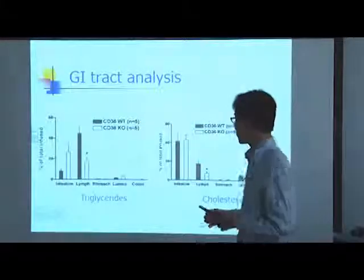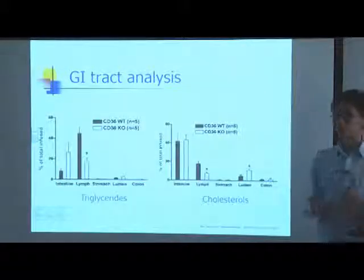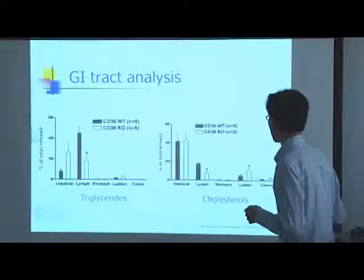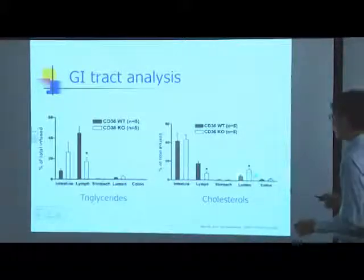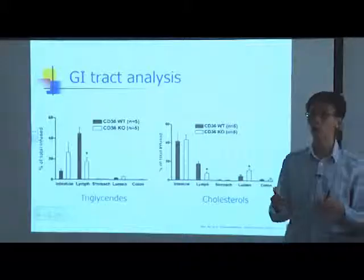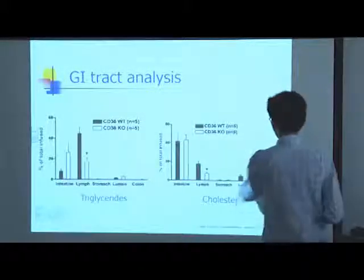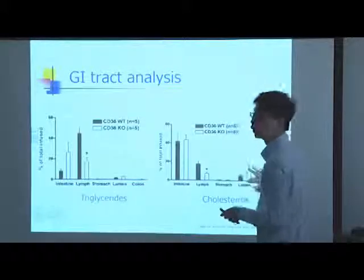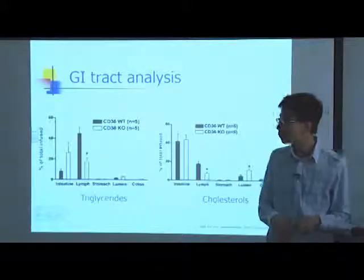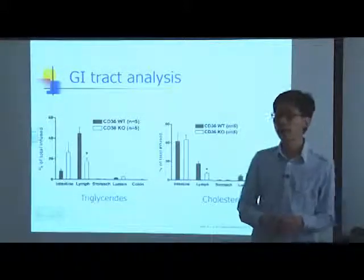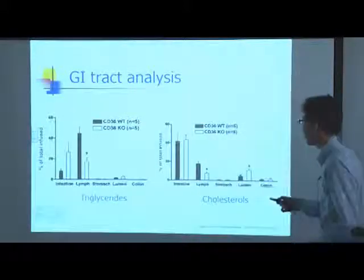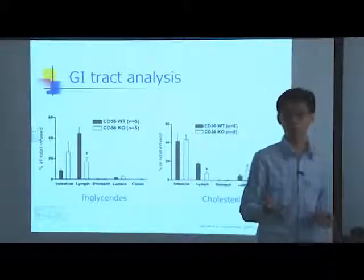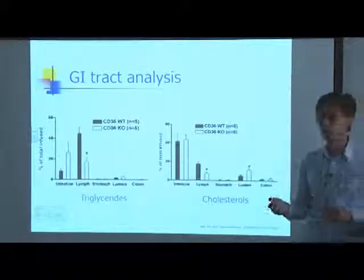Looking at the cholesterol data first: in the lumen of the intestine, knockout animals had much more cholesterol accumulation relative to wild type, indicating that CD36 facilitates cholesterol uptake because cholesterol got stuck in the lumen of knockout animals. In the lymph, radiolabeled cholesterol was also secreted less by knockout animals. This fit our hypothesis that CD36 facilitates cholesterol uptake.